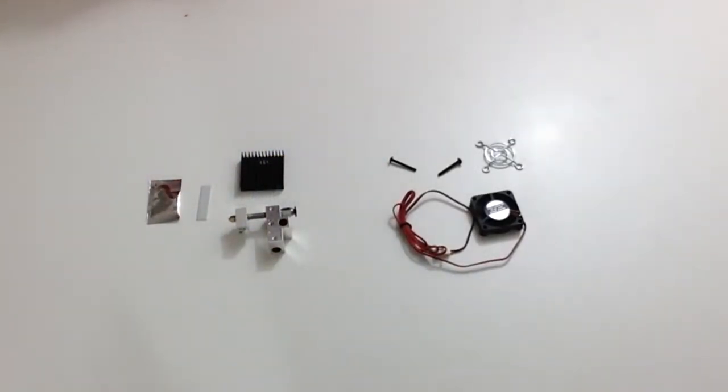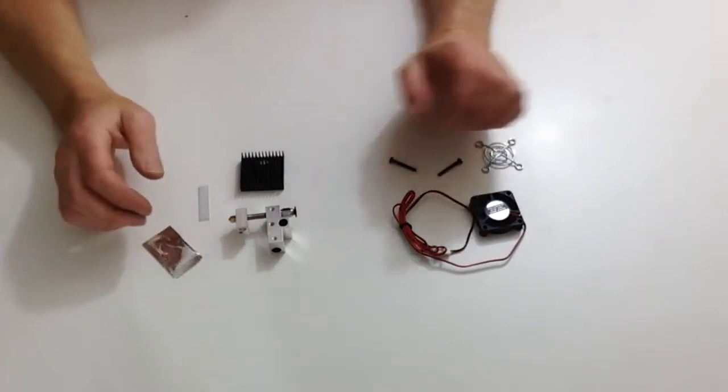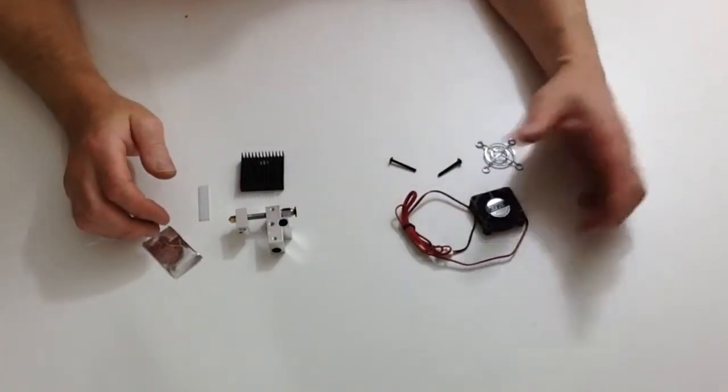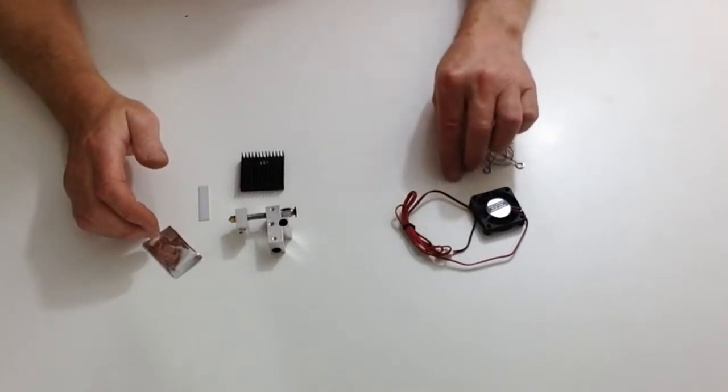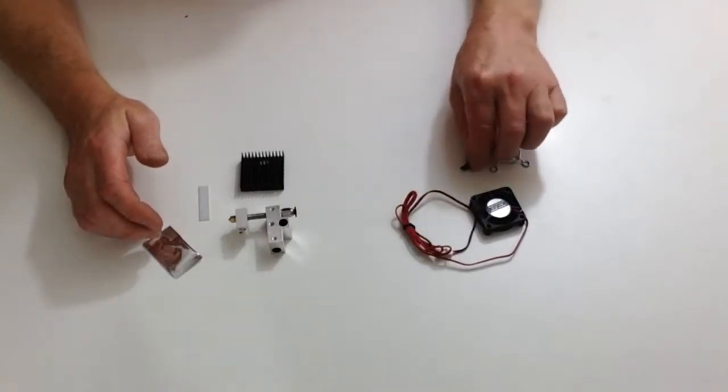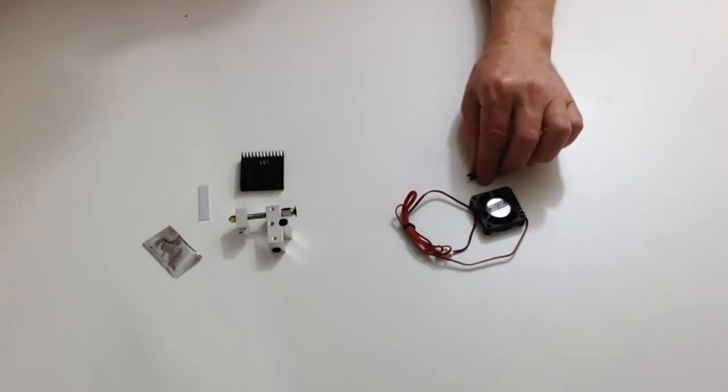In stage 29 we are going to be attaching the heat sink and cooling fan to the head block. For this you are going to need the fan, the fan cover, and the two screws which are the M3 truss head screws 26mm that were supplied with this stage.